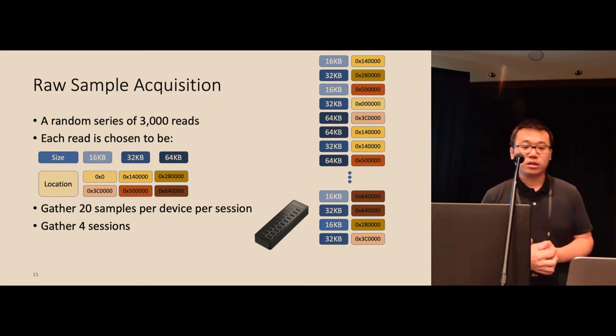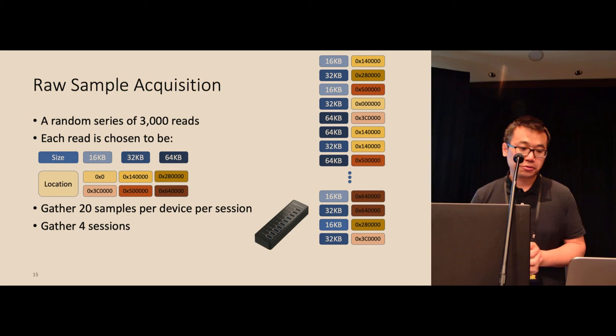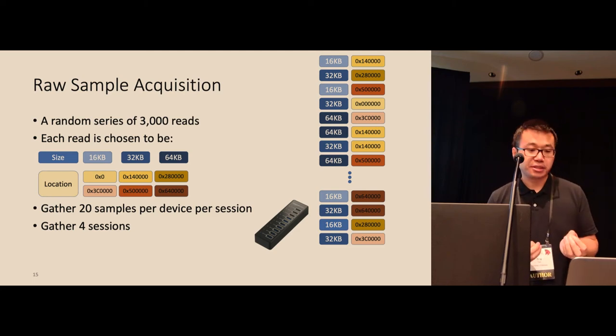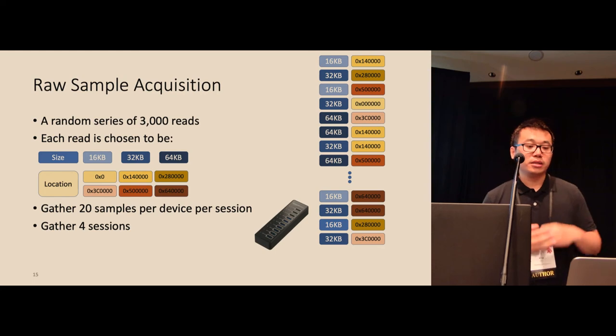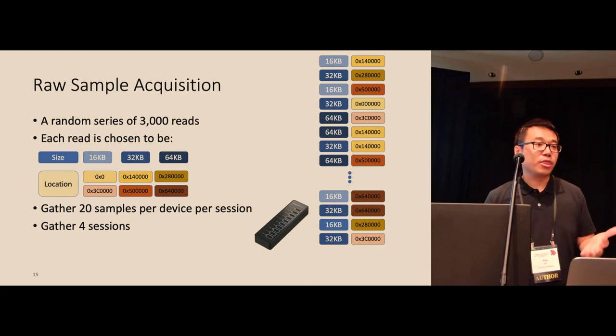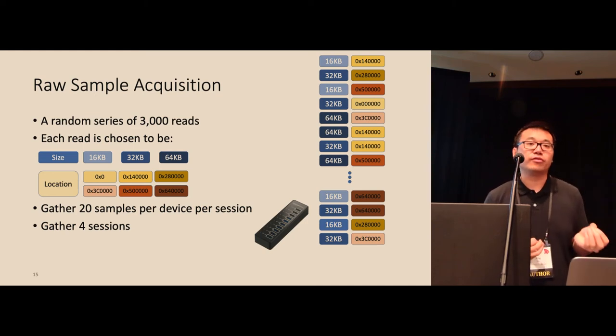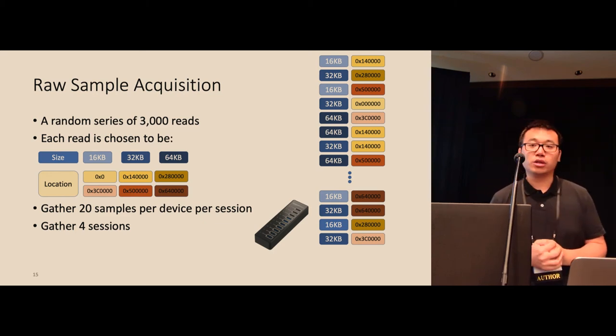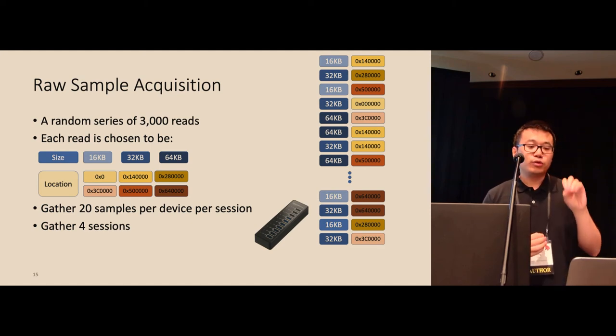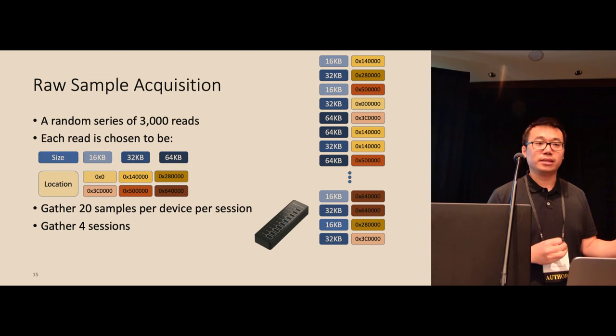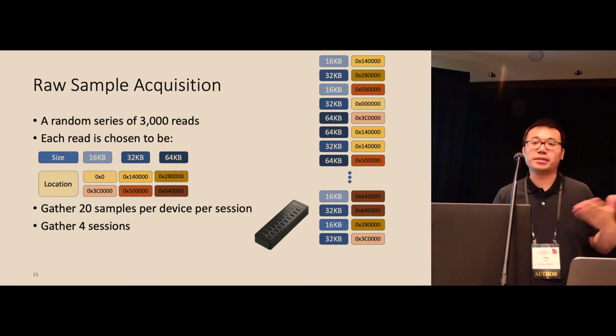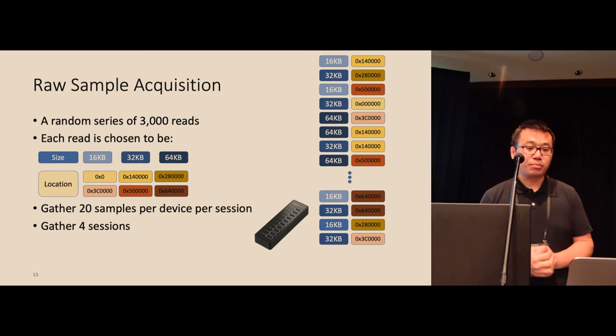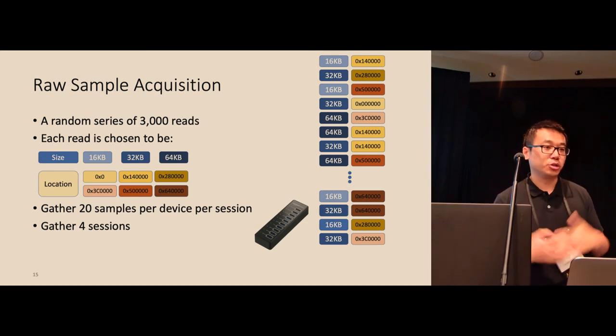Next, let's talk about the details of the design. The first step is to acquire raw samples. For collecting raw samples, we devised a system to gather information from different locations in a random order. Basically, we designed a single random series containing 3000 reads. Each read is selected from one of three phases and one of six locations. This ensures the flash controller performs different read patterns. This random series of reads is generated once and used for all tests on all devices to ensure there's no bias. In total, we gathered 80 samples for each device with 20 samples being one session. We have four sessions total.